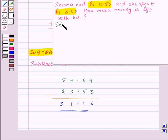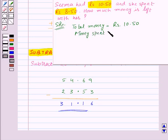Here, total money that Seema had is rupees 10.50. Money spent by her is rupees 8.50, and we need to find out money left with her.